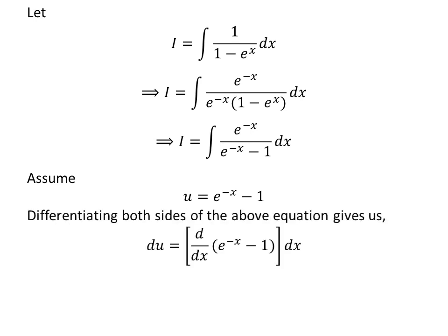Taking the differential of both sides gives us: differential of u is equal to the derivative of exponential of minus x minus 1 with respect to x, times differential of x. As the derivative of exponential of minus x is minus exponential of minus x by application of the chain rule, and the derivative of constant 1 is 0, the differential of u is equal to minus exponential of minus x times differential of x.